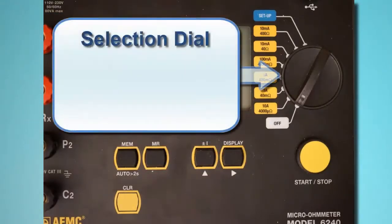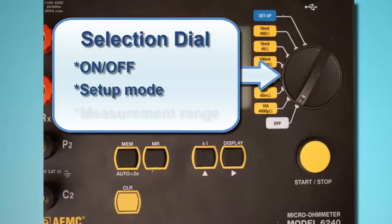To the right of the LCD is the instrument selection dial. This dial turns the instrument on and off, places the instrument in setup mode, and selects the test current resistance and current range.